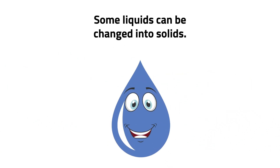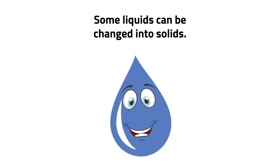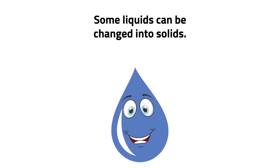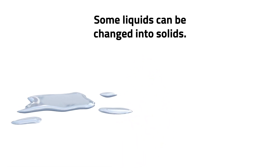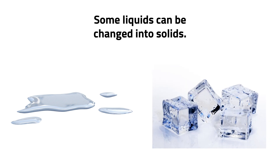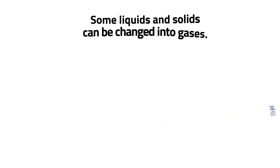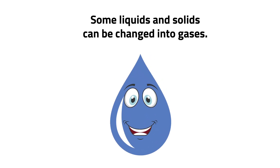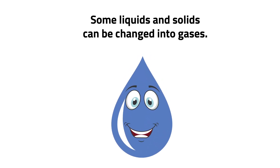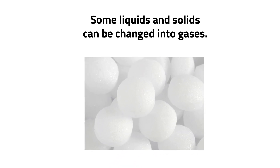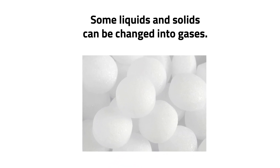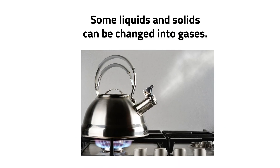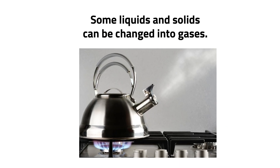Some liquids can be changed into solids. An example of a liquid that changes into solid is water. Water becomes cold enough that it turns into ice. Some liquids and solids can also be changed into gases. Examples are mothballs, which slowly disappear as they turn into gas. Water can also turn into gas through evaporation.